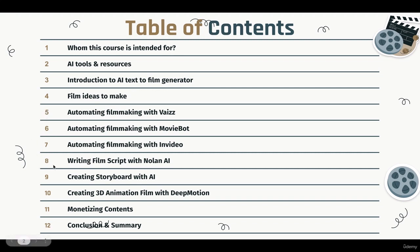Chapter eight is writing a film script with Nolan AI — that's the second project. I'll guide you step by step on how to generate a film script using Nolan AI. You don't need to write your film script manually — just type in what you want, tell the AI what film and genre you want, and in less than a couple of seconds AI generates the full film script. This saves a lot of time and money, since hiring a film script writer can cost a lot.